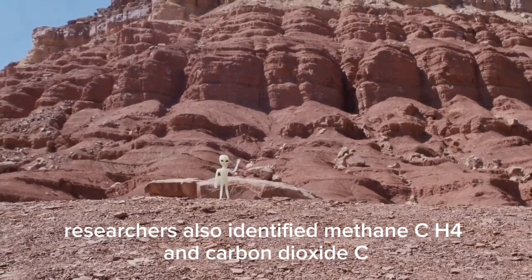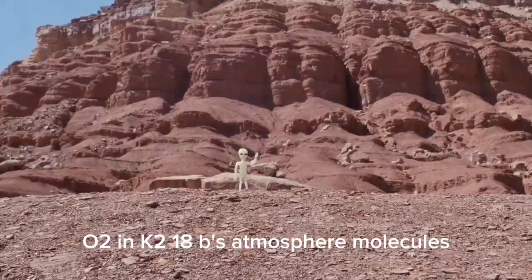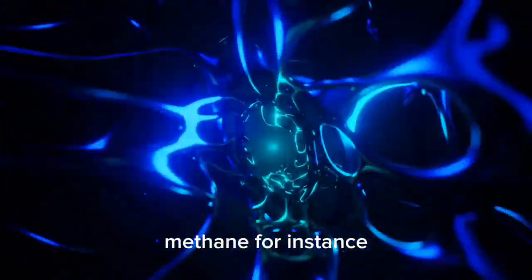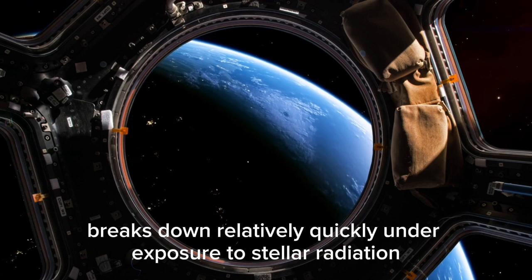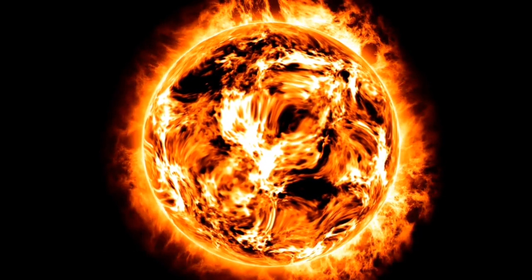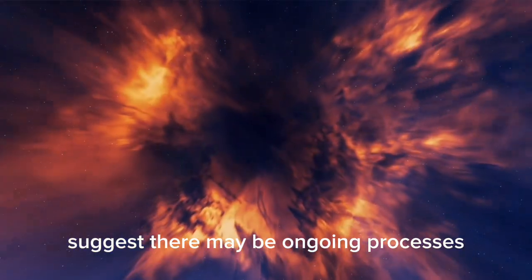Alongside DMS, researchers also identified methane (CH4) and carbon dioxide (CO2) in K2-18b's atmosphere—molecules that, especially when found together, have sparked immense interest. Methane, for instance, breaks down relatively quickly under exposure to stellar radiation. For it to still be present in significant quantities, it suggests there may be ongoing processes, possibly even biological, that replenish it. Although carbon dioxide is more commonly found in a variety of planetary atmospheres, its co-occurrence with methane and DMS strengthens the case for potential life.